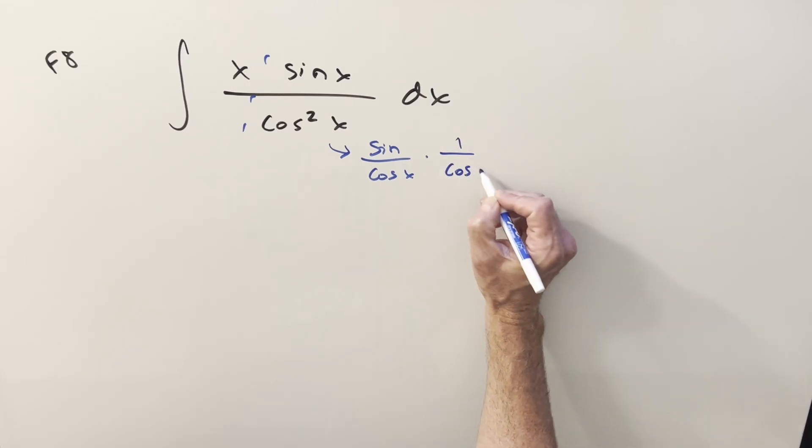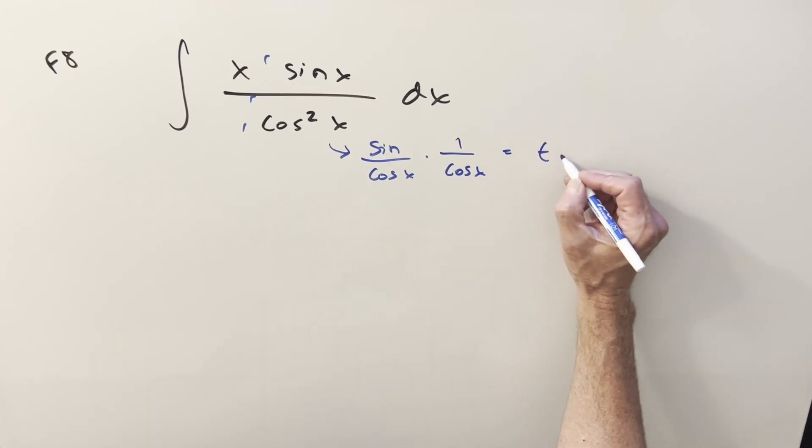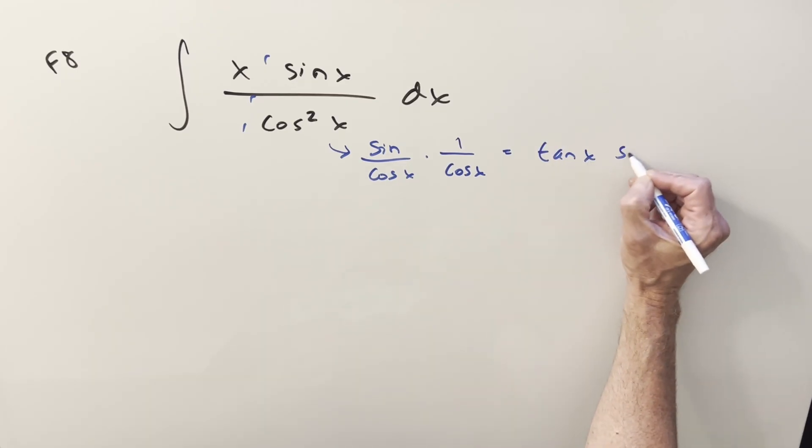And then if we do this, and then if we put this in terms of tangent and secant, so this is just going to be tan x secant x.